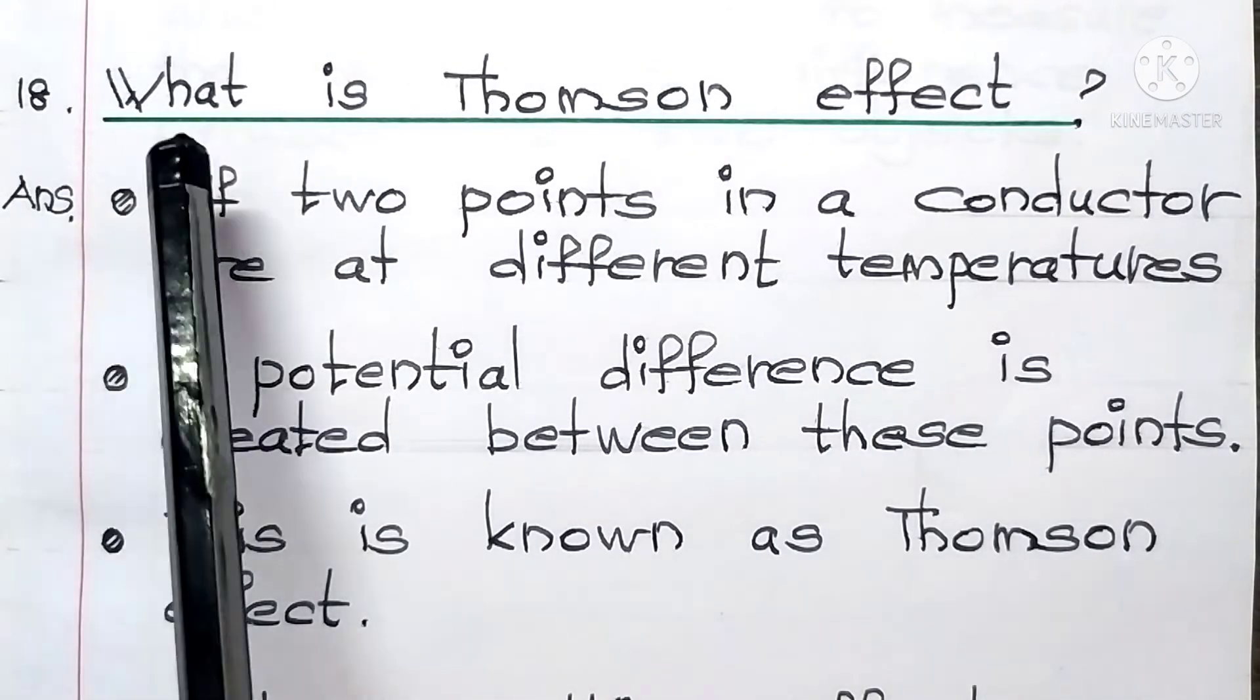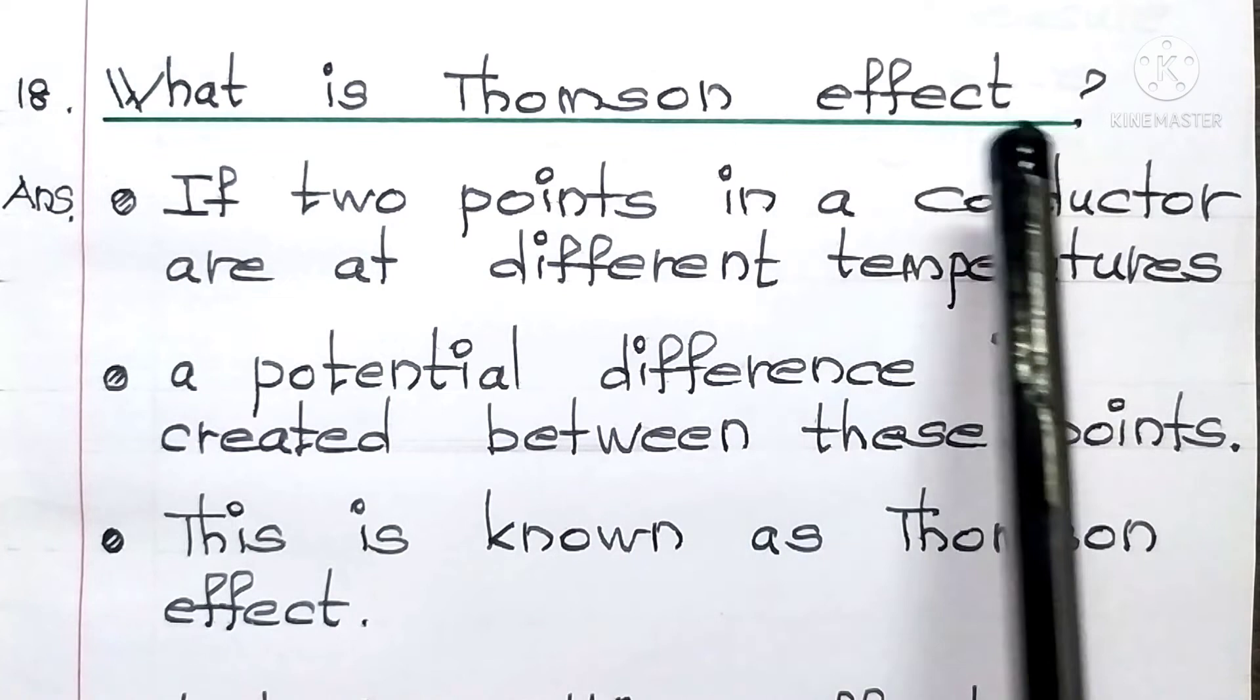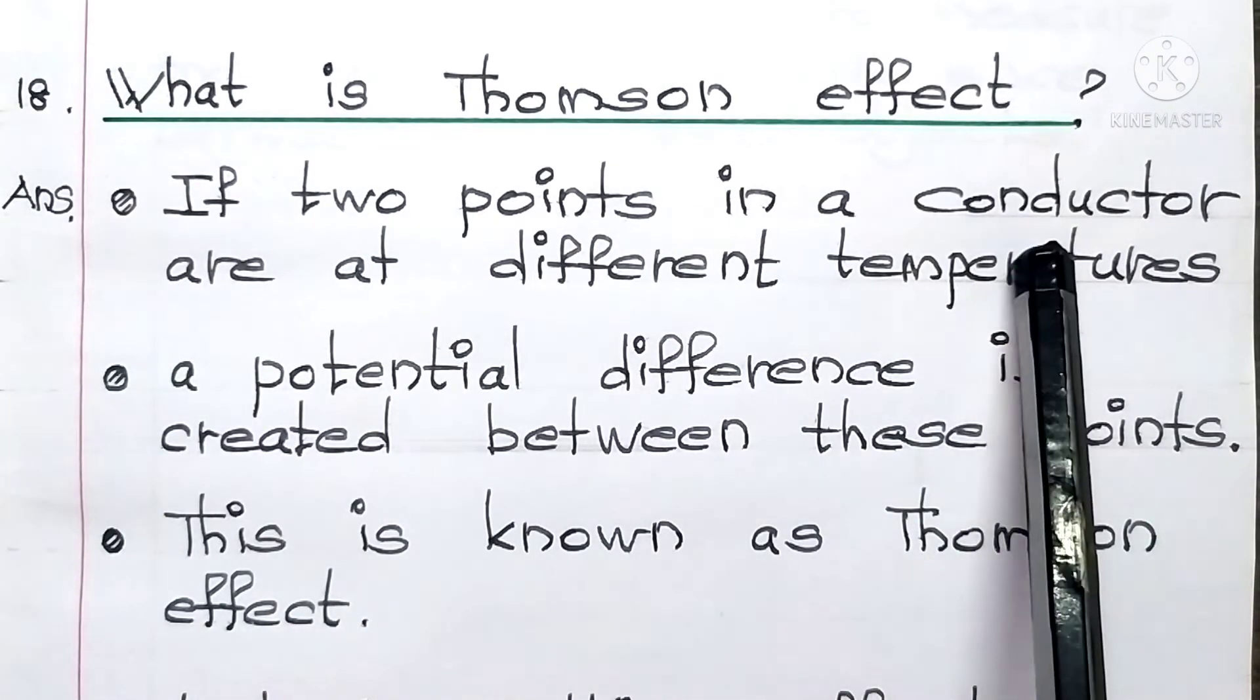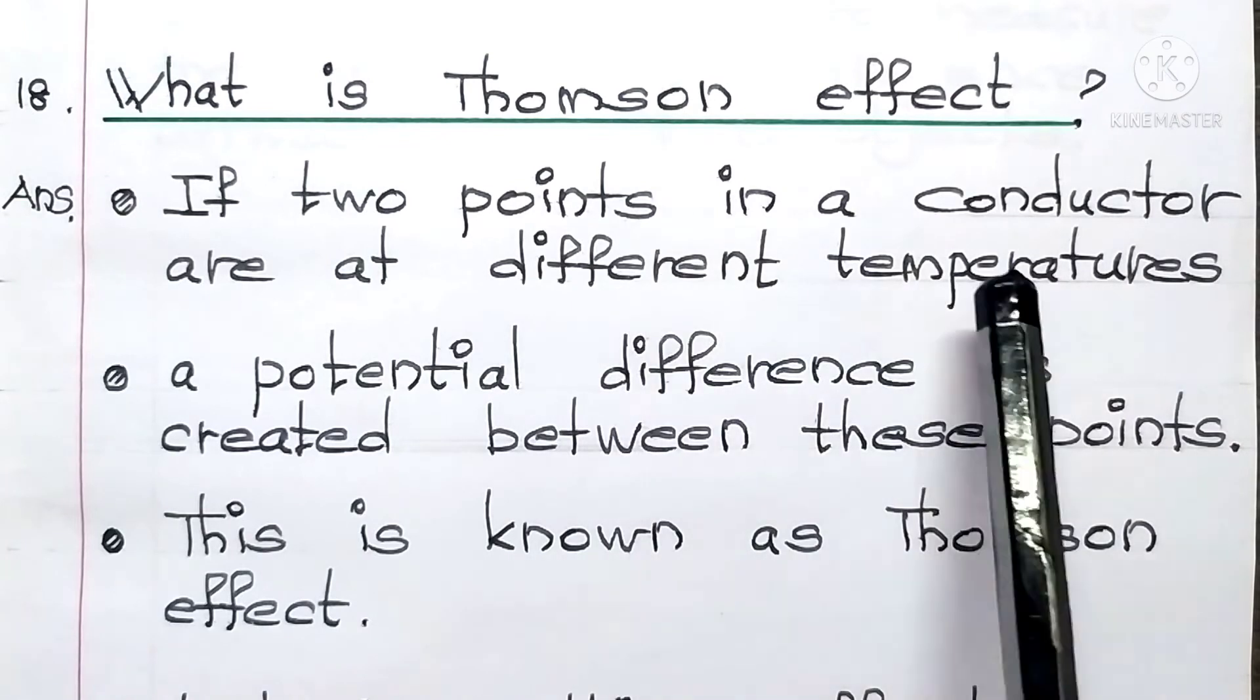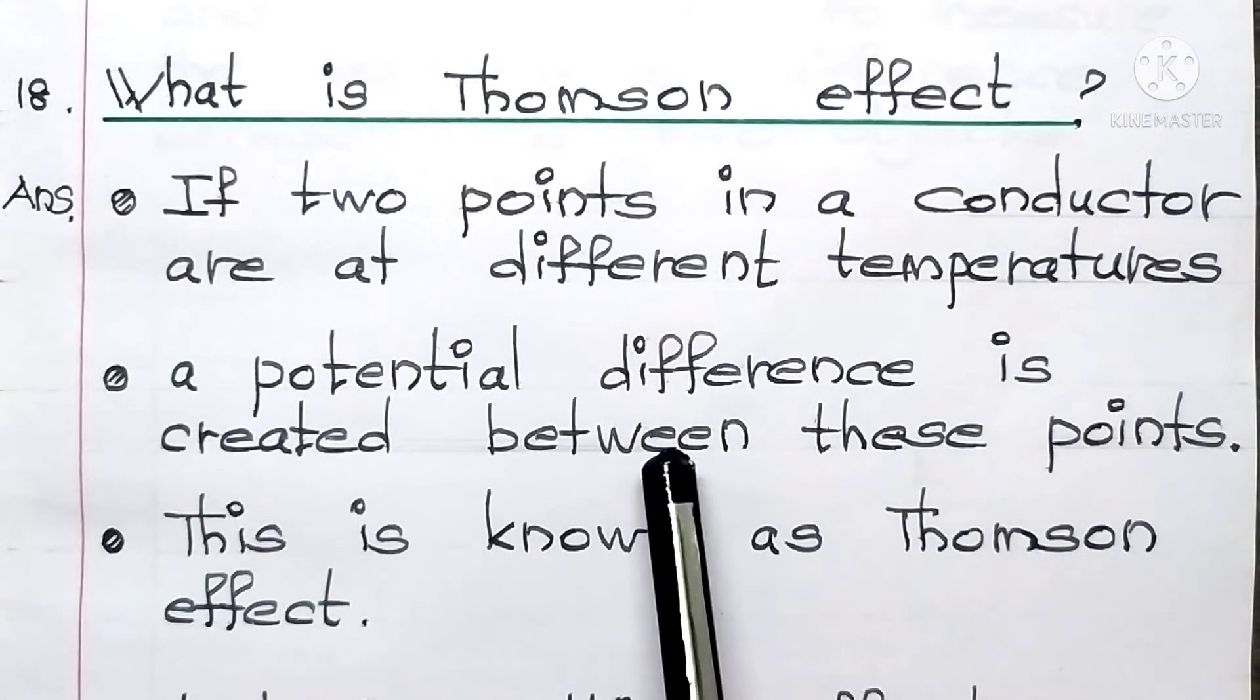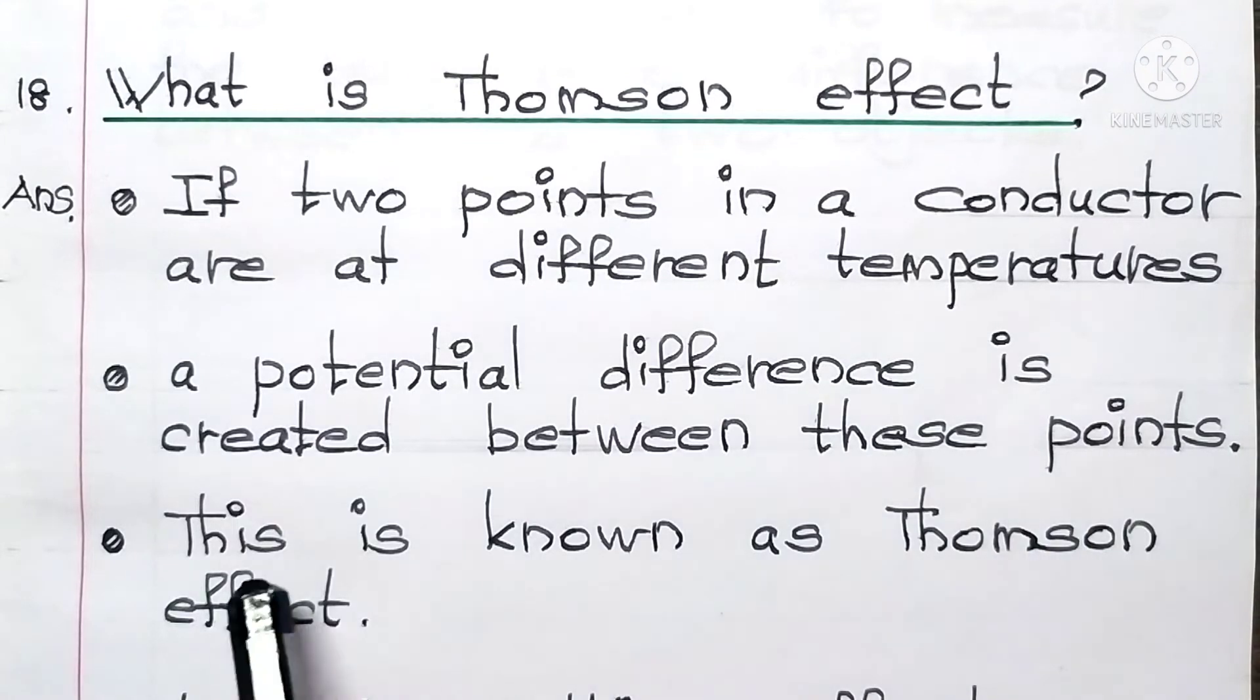Question number 18. What is Thomson Effect? Answer: if two points in a conductor are at different temperatures, a potential difference is created between these two points. This is known as Thomson Effect.